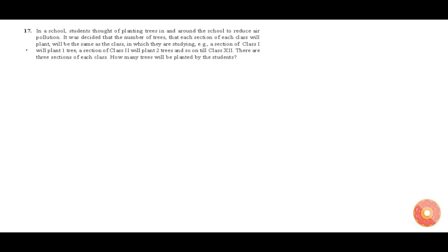Let me see what is given in the question. It is given that class 1 will plant 1 tree, class 2 will plant 2 trees, class 3 will plant 3 trees, and so on till class 12, and it is also given that there are 3 sections in each class.